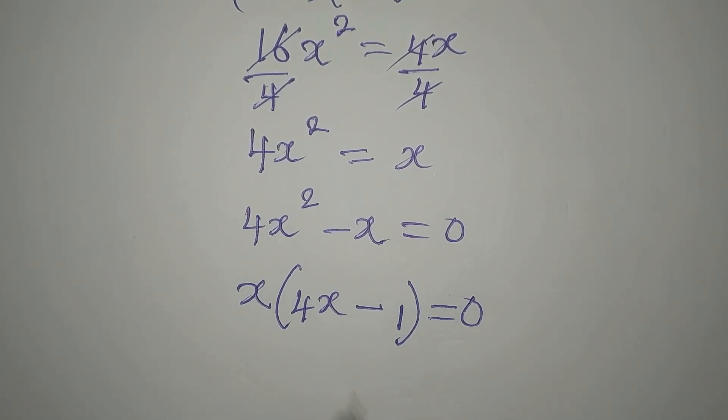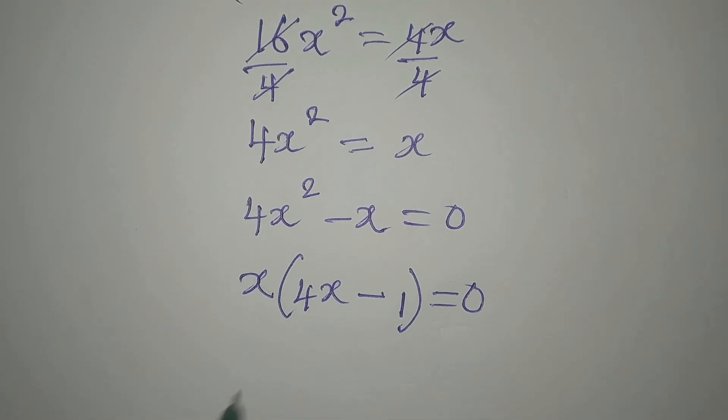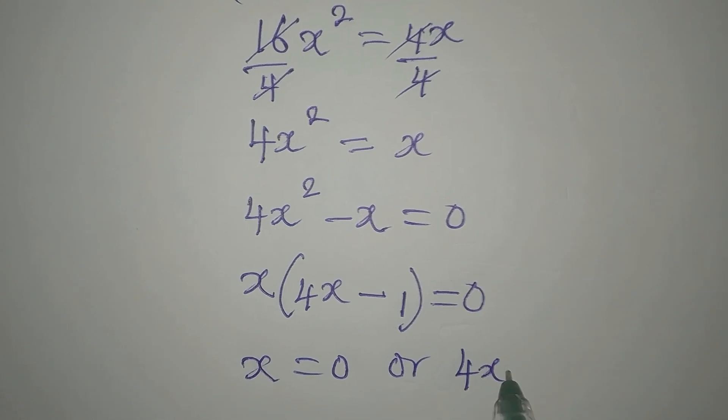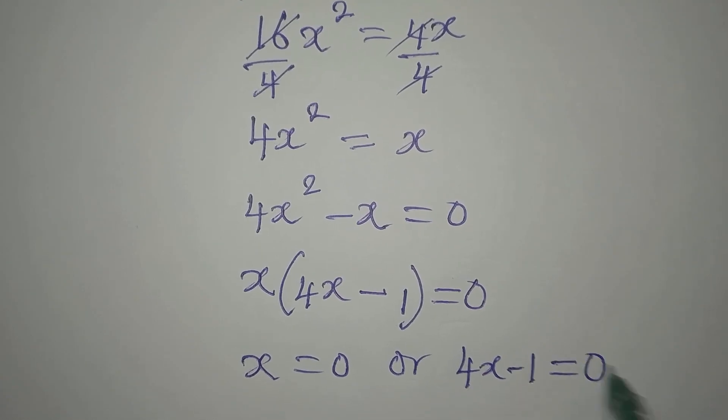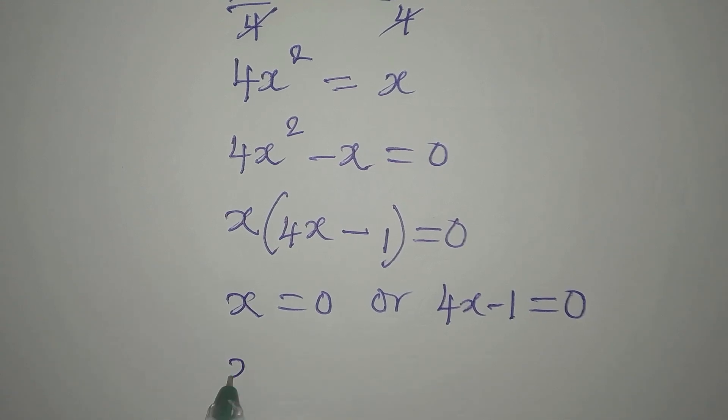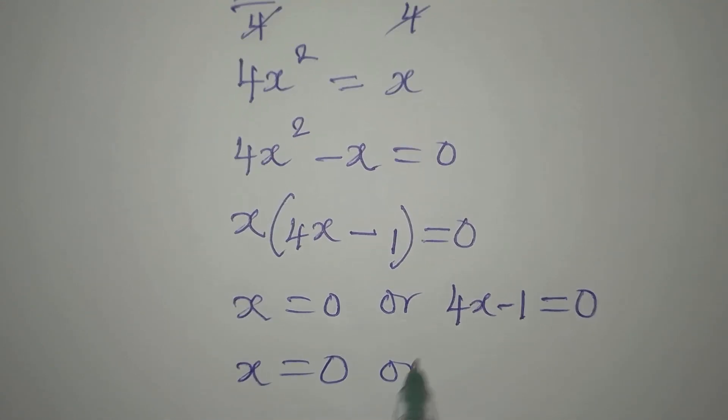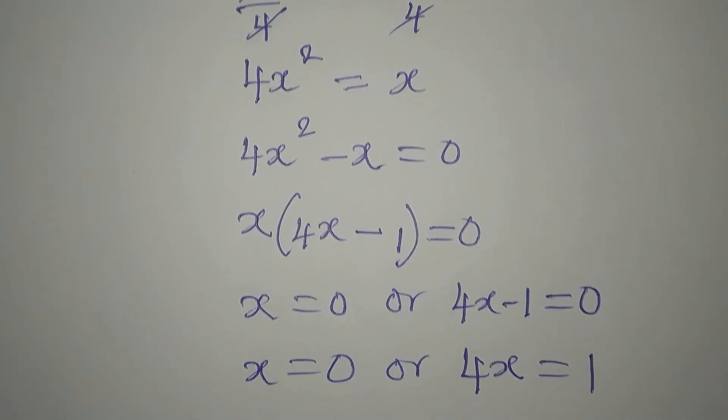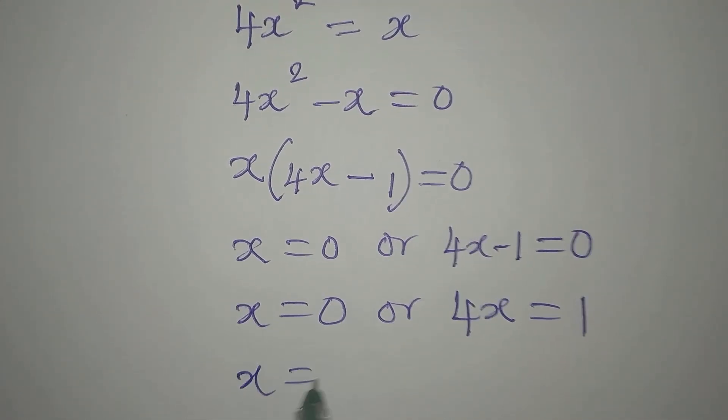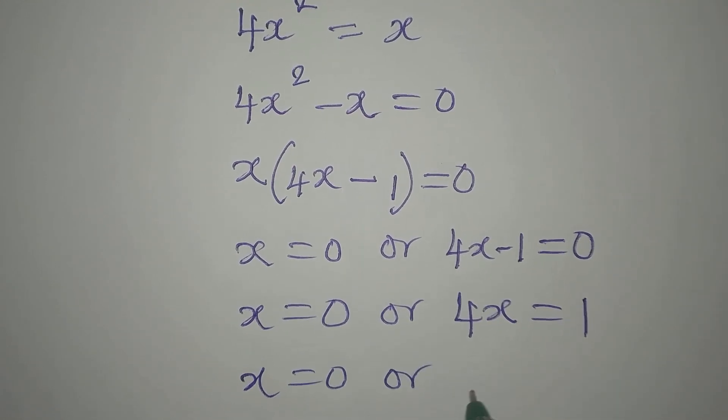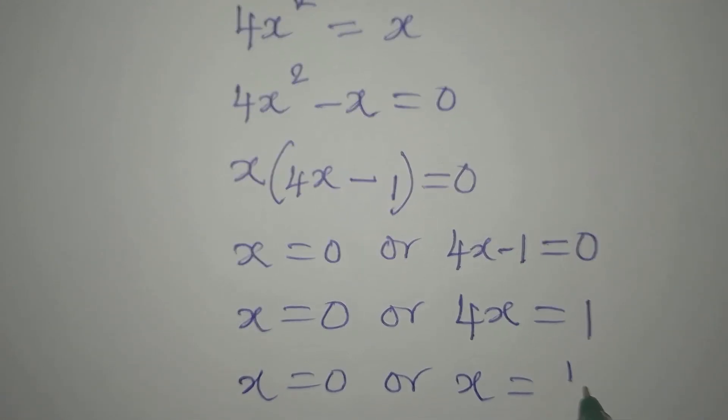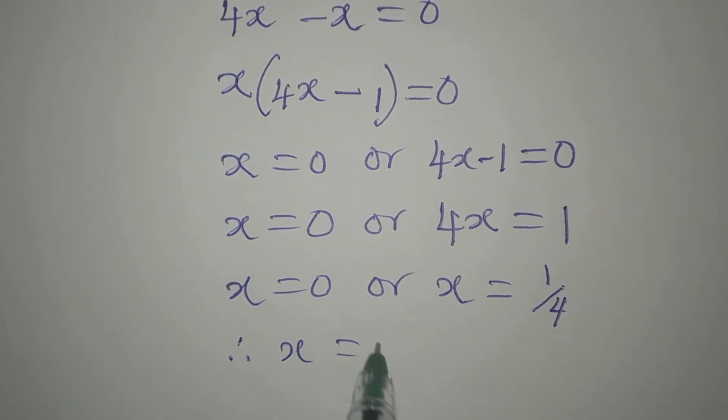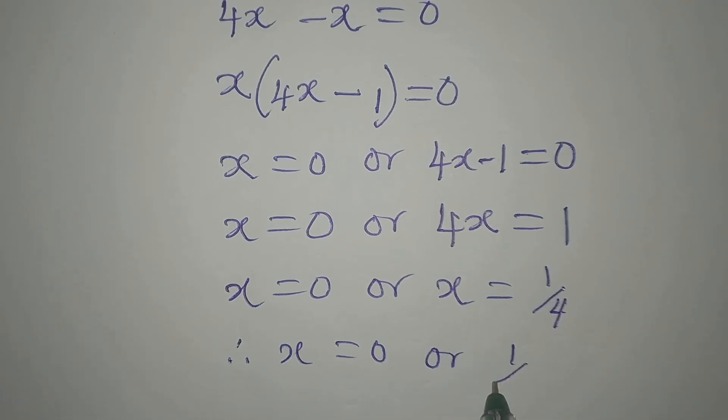To get 0, either x = 0 or 4x - 1 = 0. From the first factor, x = 0. From the second, 4x = 1, so x = 1/4. Therefore, x = 0 or 1/4.